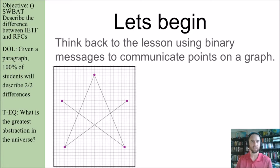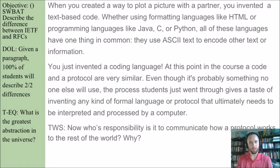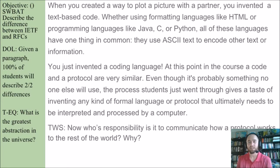Let's really begin today's lesson. Think back to using binary messages to communicate points on a graph — that symbol should look familiar. When you created a way to plot a picture with a partner, you invented a text-based code. Whether using formatting languages like HTML or programming languages like Java or Python, all of these languages have one thing in common: they use ASCII text to encode other text or information. This is the layers of abstraction we've talked about before — we're building on top of something already built. When you did that, you invented a coding language.